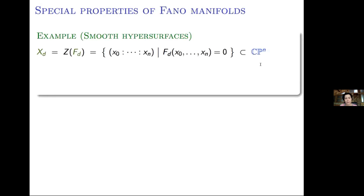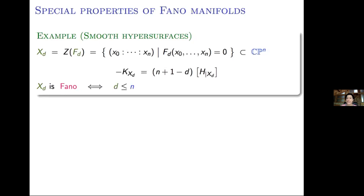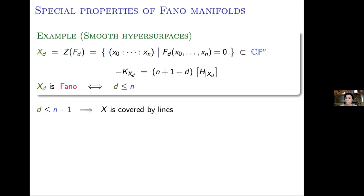In this case, the anticanonical class is easy to compute — it is a multiple of a hyperplane section, and this multiple tells you the Fano condition. The hypersurface of degree d in P^n is Fano if and only if the degree d is less than or equal to n. For degree less than or equal to n−1, this is an easy exercise: you can compute that X is covered by lines. For any point on your projective variety, you write down the equation of a generic line, plug it into the equation of the hypersurface, and you can always find a solution, so it is always covered by lines for low degree.